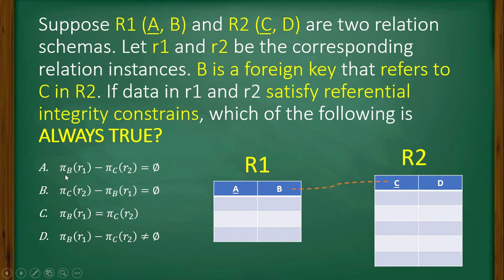So the first option, select B from r1 instance minus select C from r2 instance equal to empty set. It is true. It is always true.